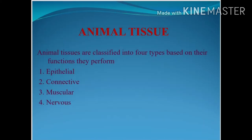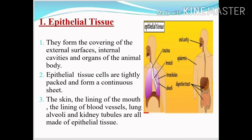Animal tissues are classified into 4 main types based on the function they perform: epithelial, connective, muscular, and nervous tissue. Epithelial tissue mainly does the work of covering — whether it is the external surface or the lining of internal cavities. Organs are also covered by epithelial tissue. These tissues are tightly packed, like a continuous sheet. The skin, lining of the mouth, lining of blood vessels, lungs, alveoli, and kidney tubules are all made up of epithelial tissues.